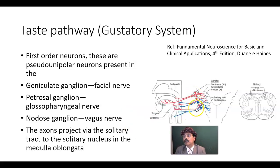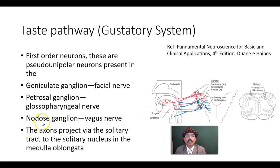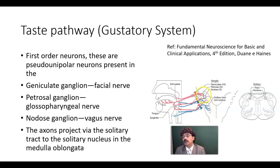The geniculate ganglion is associated with the facial nerve and picks up taste sensation from the anterior two-thirds of the tongue. The nodose ganglion picks up taste sensation from the extreme posterior part of the tongue, the epiglottis, pharynx, and upper part of the esophagus. The axons project via the solitary tract to the solitary nucleus in the medulla oblongata. The solitary nucleus is a collection of nerve cells inside the central nervous system.